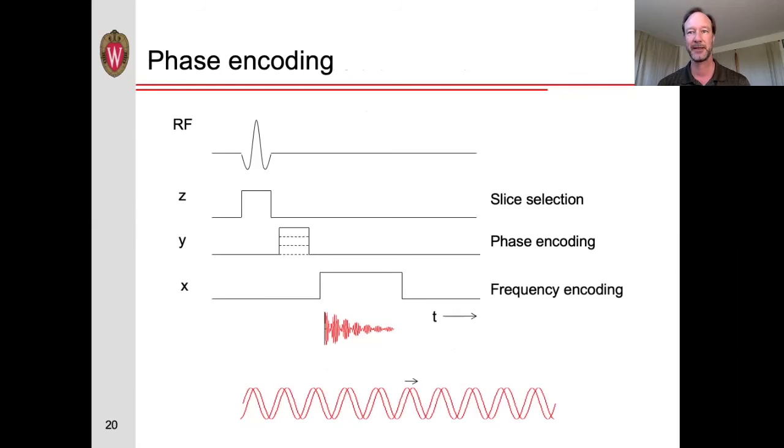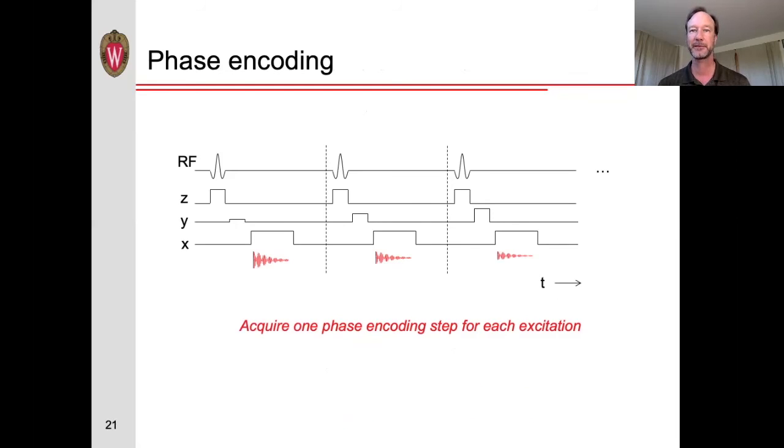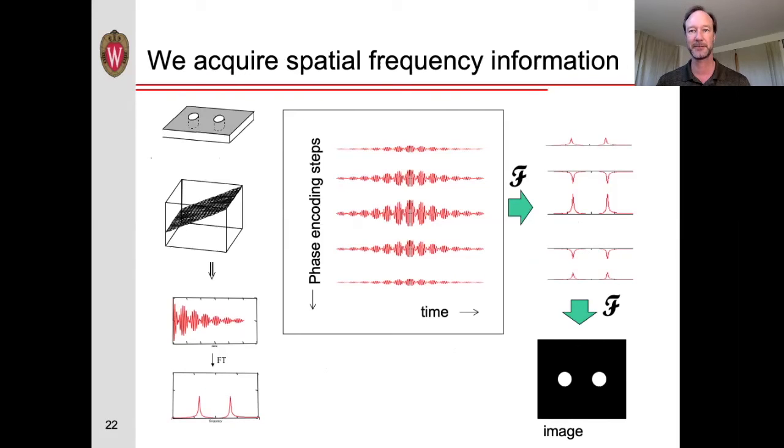However, a more commonly used technique is what is called phase encoding. Instead of applying a gradient during the excitation or during the acquisition, we can apply a gradient for a short time in between the two. This additional gradient shifts the phase of the signal being measured. We then have to repeat this procedure multiple times, each with a slightly different amplitude of the phase encoding gradient and use a set of these signals to form a 2D image. If we stack the set of these acquired signals, each with a different phase encoding gradient amplitude, then if we look at the frequencies in each of those signals in the x direction, we can get an image in the x direction, and similarly, if we look at the frequencies in the y direction across different phase encoding steps, we can get our image in the y direction. Now, this concept is often difficult to understand, at least it was for me when I was first learning about MRI, so let me break this down in a slightly different way.